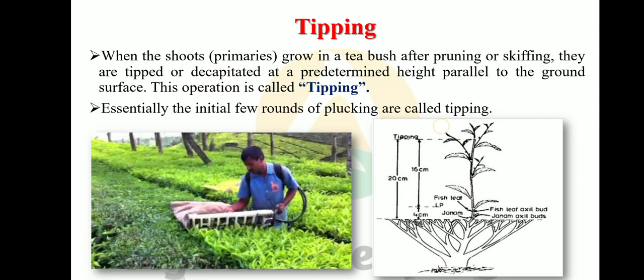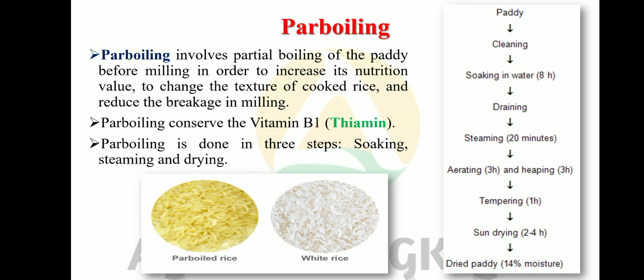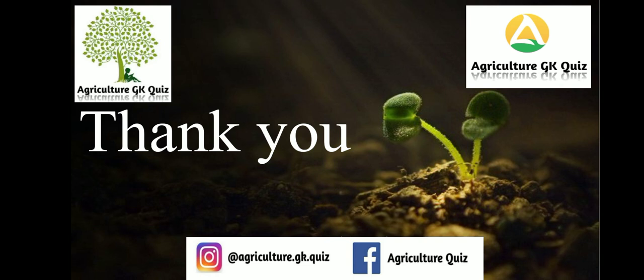Parboiling is associated with the paddy crop. Parboiling involves partial boiling of the paddy before milling in order to increase its nutritional value, change the texture of cooked rice, and reduce breakage during milling. Most importantly, parboiling conserves vitamin B1 (thiamine). Parboiling is done in three steps: soaking, steaming, and drying. Parboiled rice is slightly yellowish, while white rice is completely white.